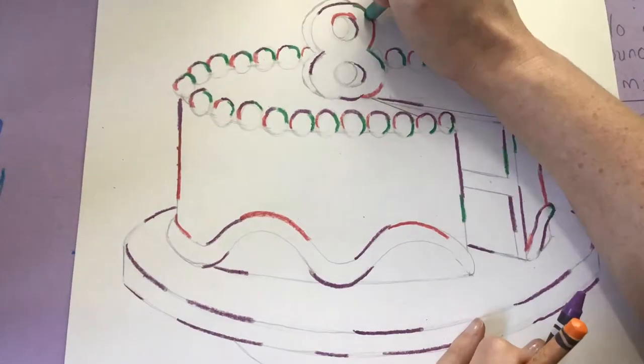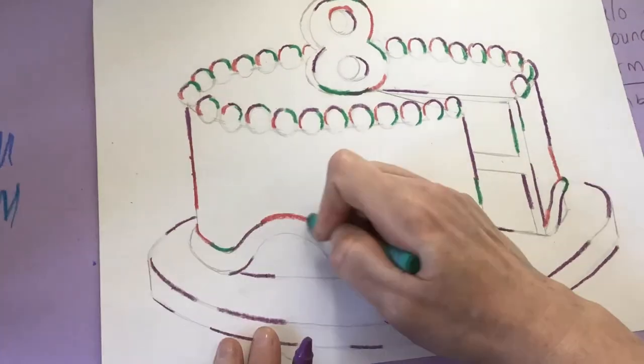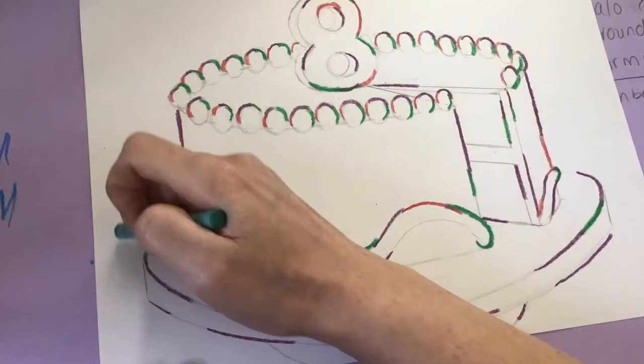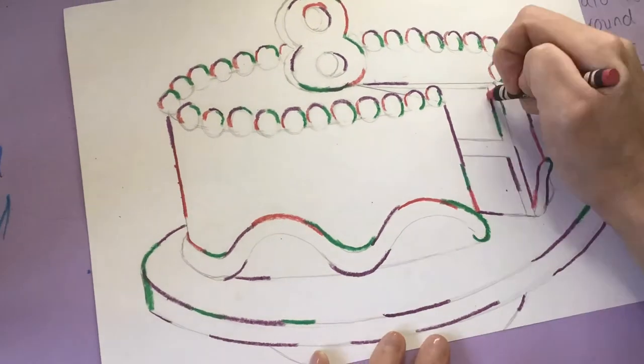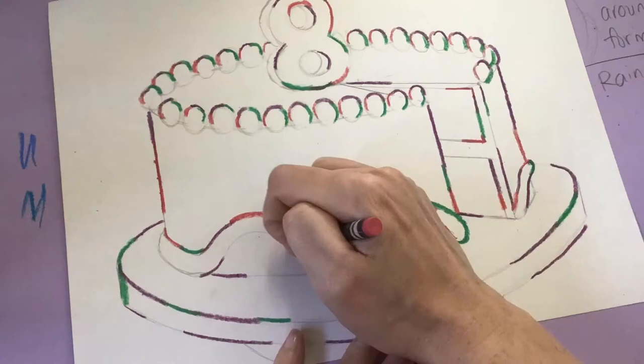If you look closely and try to notice, I'm switching my crayon colors and I'm moving around my cake, trying to put a little bit of each of the colors everywhere.